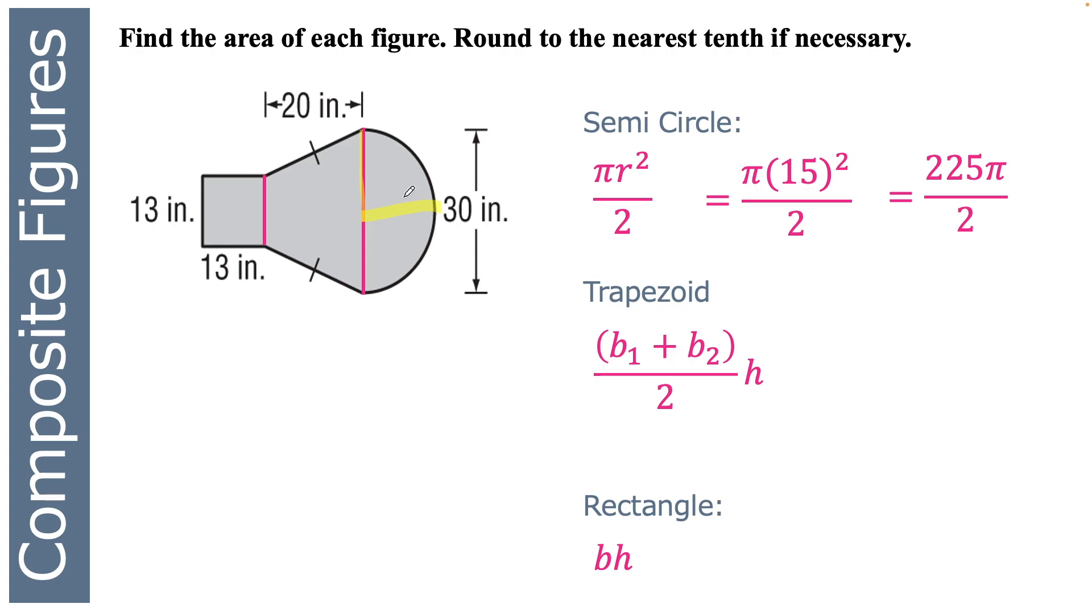Now the trapezoid, we've got bases. These are the bases here, the two parallel lines of the trapezoid right here and right here. So the bases are 30 right here and 13. So 30 plus 13 divided by 2 and then times the height, they tell us right here is 20. That equals 430.